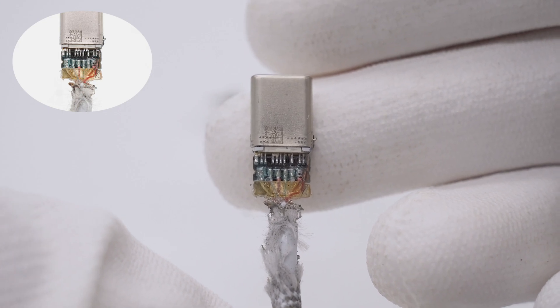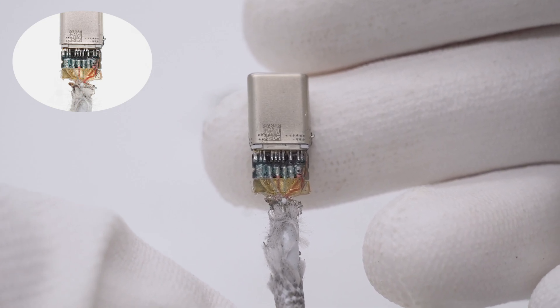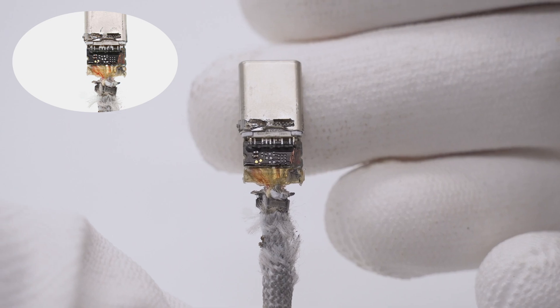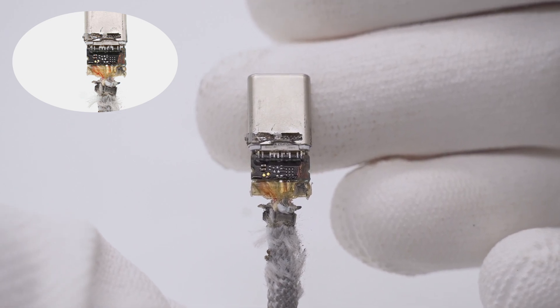There are several wires on the front of the PCB fixed by glue. The space is enough to solder an e-marker chip, but we cannot find it on the back.